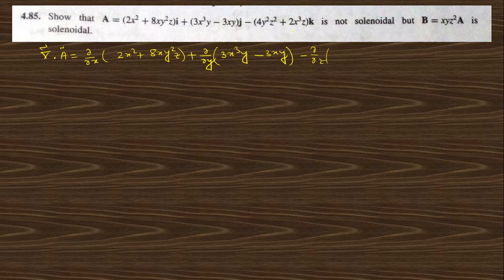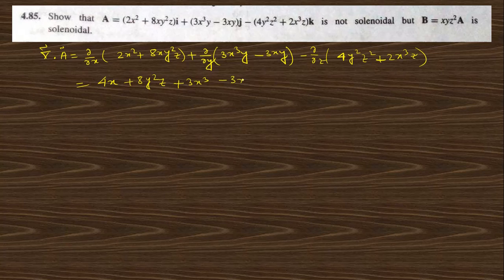there is a minus sign — minus (4y²z² + 2x³z). Taking the derivatives: with respect to x we get 4x + 8y²z; with respect to y we get 3x³ − 3x; and with respect to z we get 2x³. These terms are not equal to zero, so this is not solenoidal. A is not solenoidal.